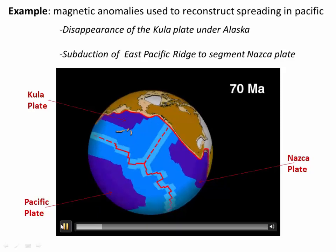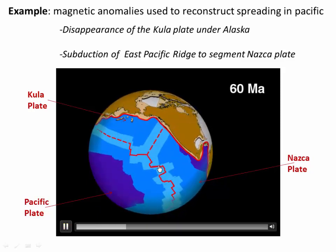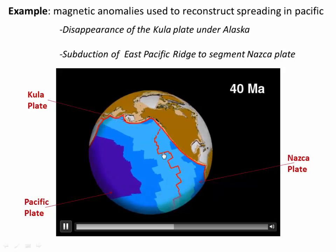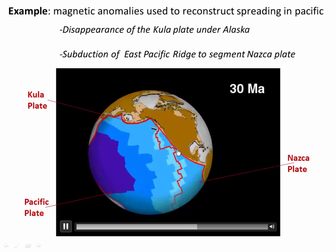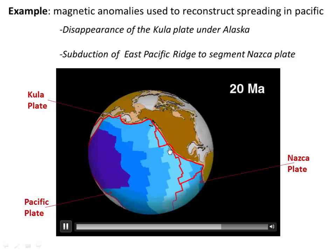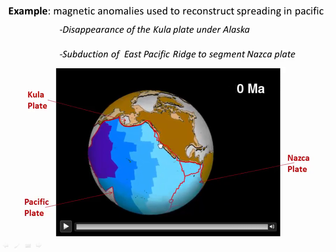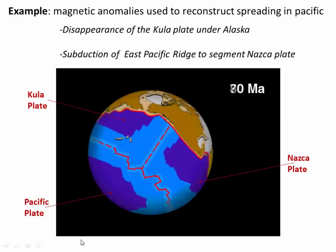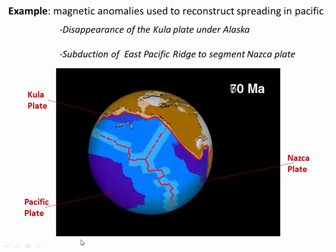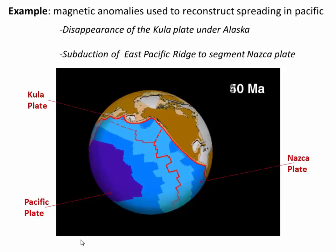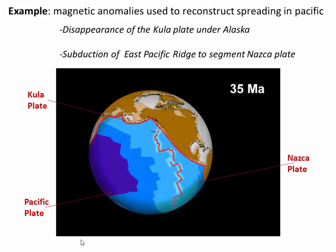Let's watch this one more time. Spreading here, but the whole ridge itself is actually moving towards the coast of California. The ridge is subducted — that creates the Juan de Fuca plate. This is the Mendocino triple junction. This is now the San Andreas Fault. We're able to reconstruct all of those motions literally by running seafloor spreading in reverse.